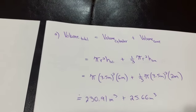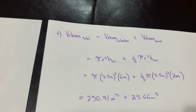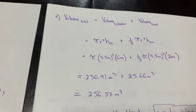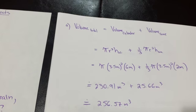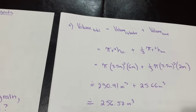And I find 230.91 cubic meters plus 25.66 cubic meters gives me a total volume of just under 257 cubic meters.